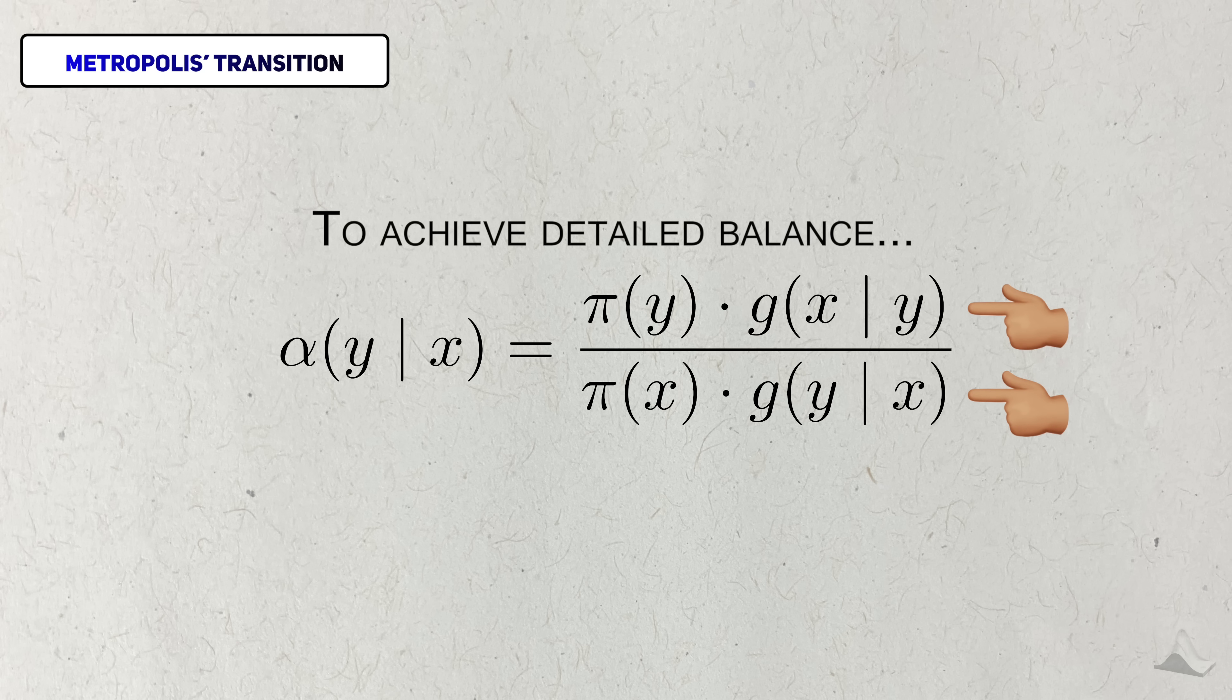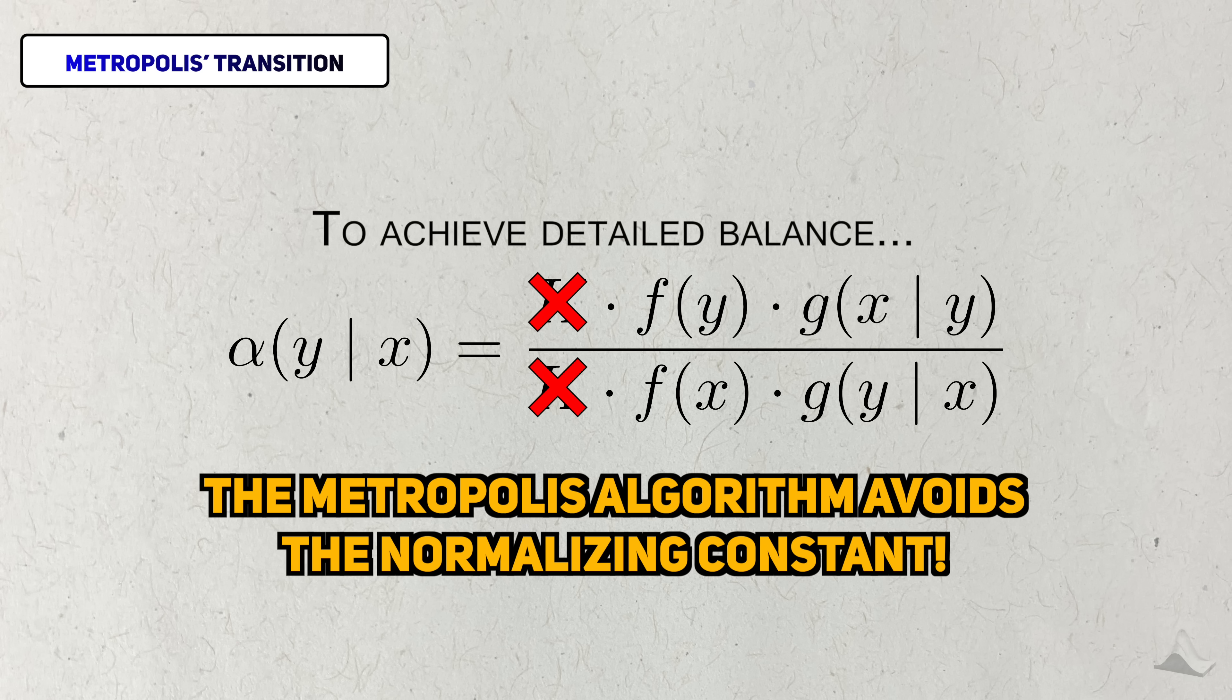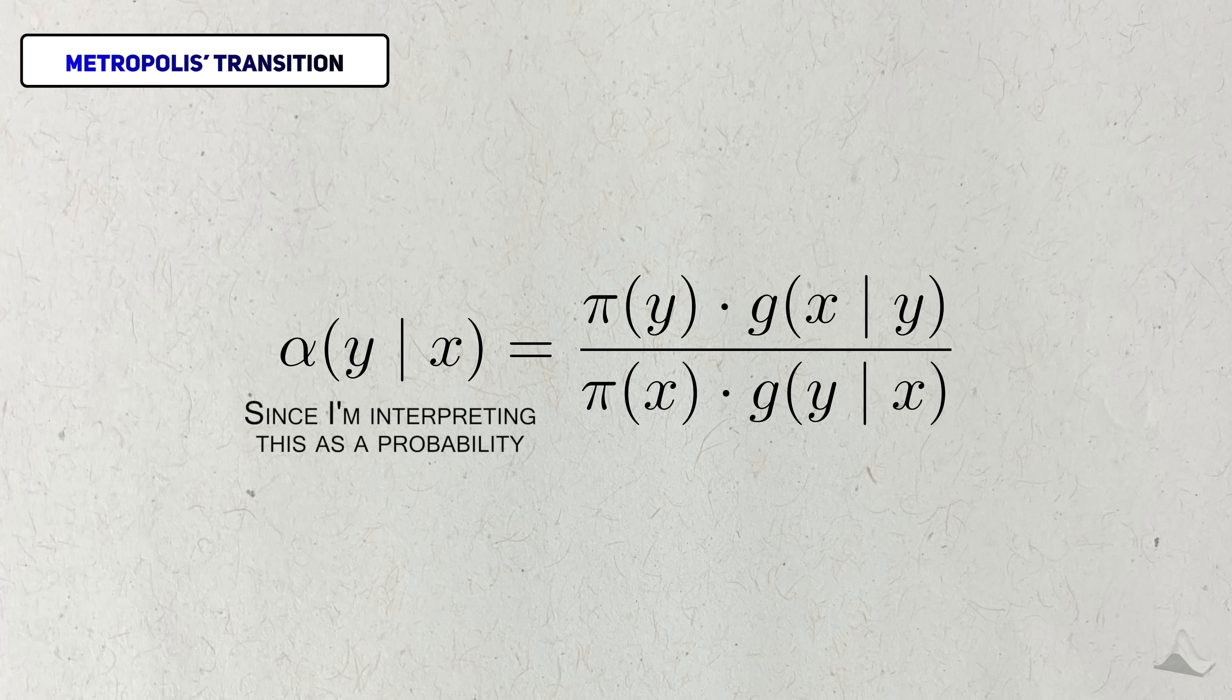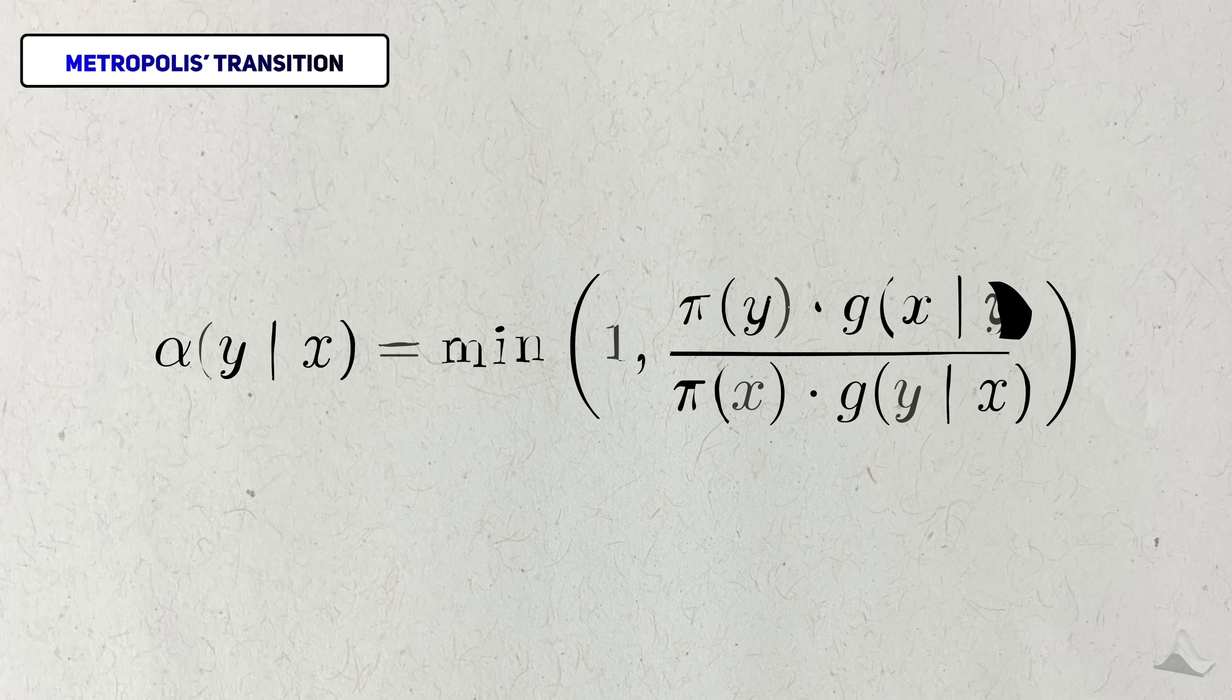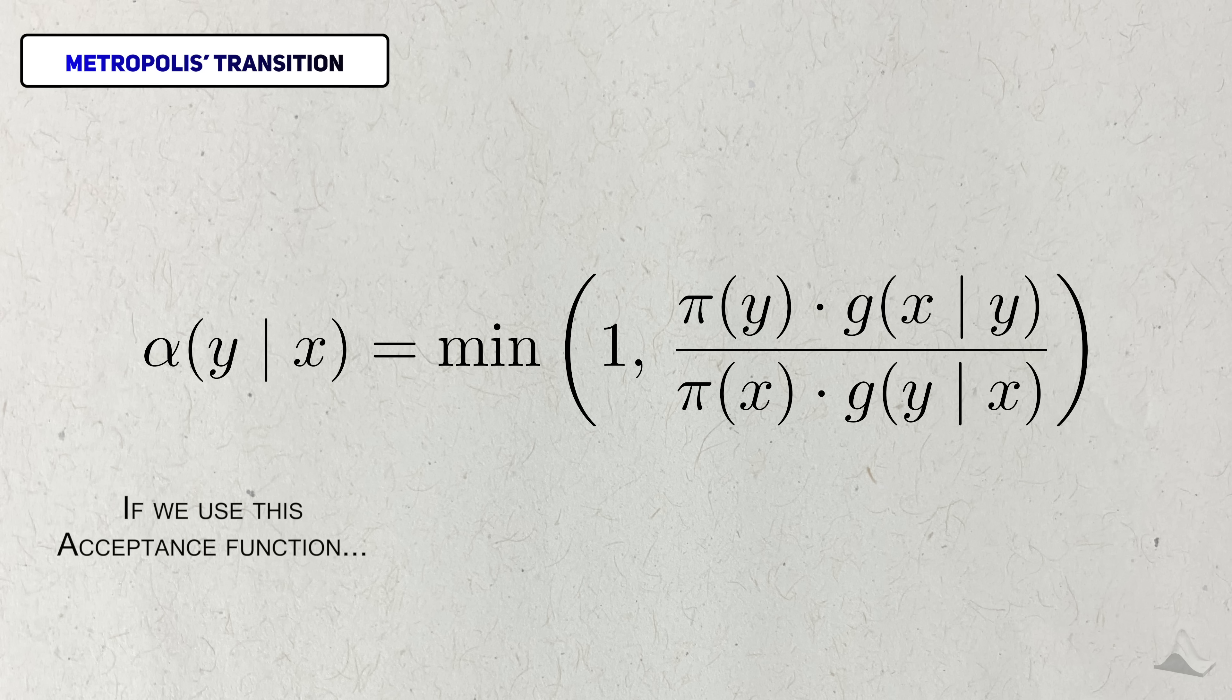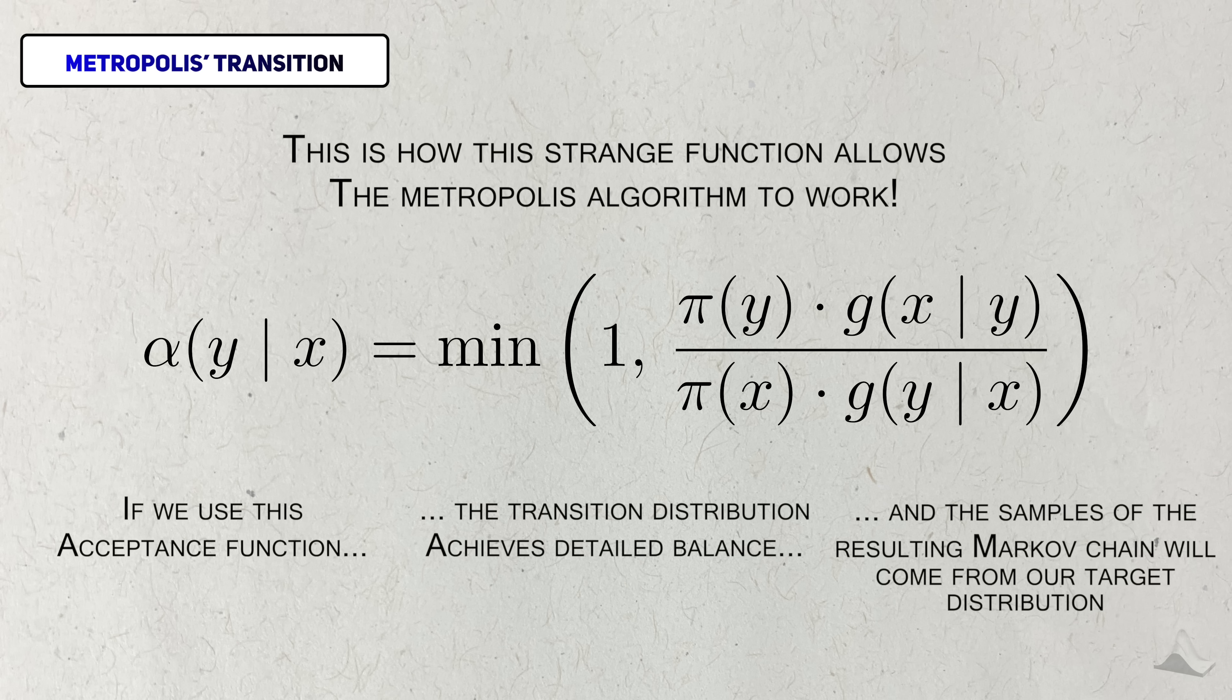What we get is a ratio of these two terms, and the form of this function is worth noting. By taking the ratio of the target distributions, the constants cancel out. And as a result, the Metropolis algorithm avoids the need to calculate this constant in the first place. Since I'm interpreting the output of this acceptance function as a probability, we need to limit how high it can go. When the numerator is greater than the denominator, the function is greater than 1, so we can set the minimum between this ratio and 1. If we use an acceptance function with this form, then our transition distribution will achieve detailed balance. And therefore, a Markov chain using this function will create samples from our target distribution. And that's why this strange little function allows the Metropolis to do what it needs to do.